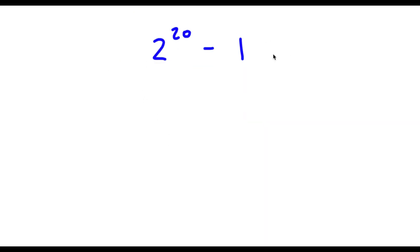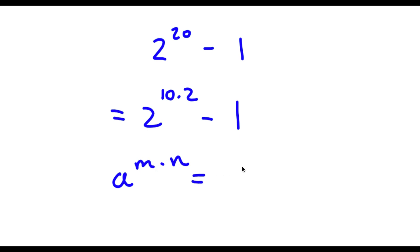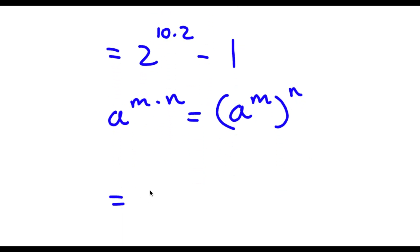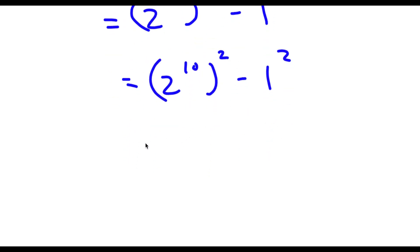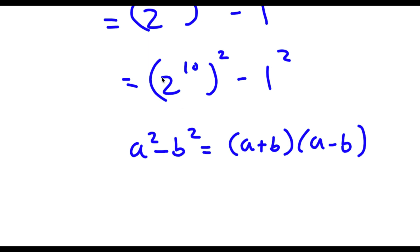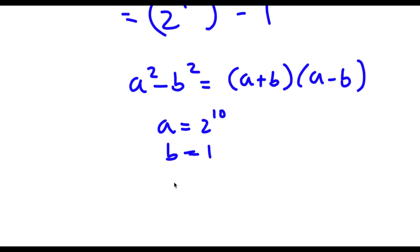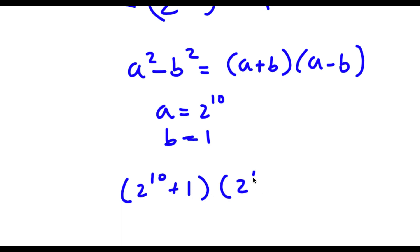Alright, so I have 2 to the power of 20 minus 1. Now 20 we can rewrite as 10 times 2, so I have 2 to the power of 10 times 2, minus 1. Now if I have something in the form a to the power of m times n, this is the same as a to the power of m to the power of n. So 2 to the power of 10 times 2 equals 2 to the power of 10, to the power of 2, minus 1. Now 1 is the same as 1 squared, and if I have a squared minus b squared, this equals (a + b)(a - b). So a is 2 to the power of 10 and b is 1, giving me (2^10 + 1)(2^10 - 1).